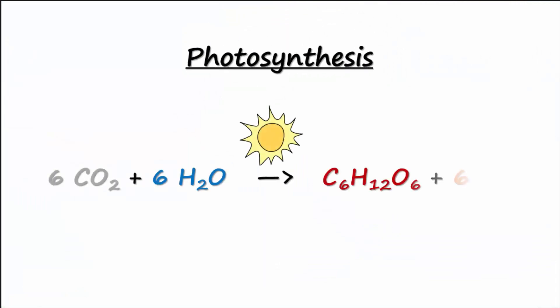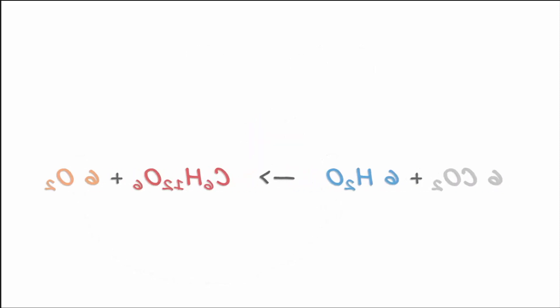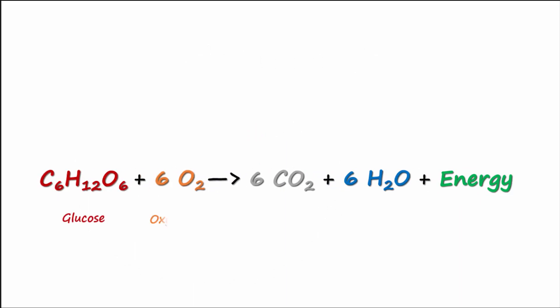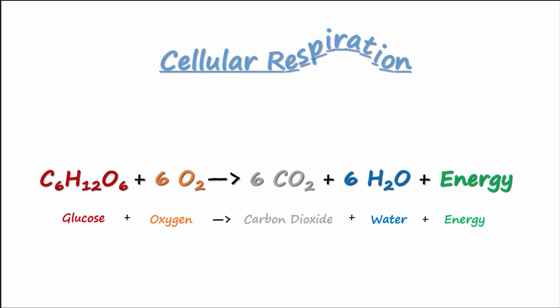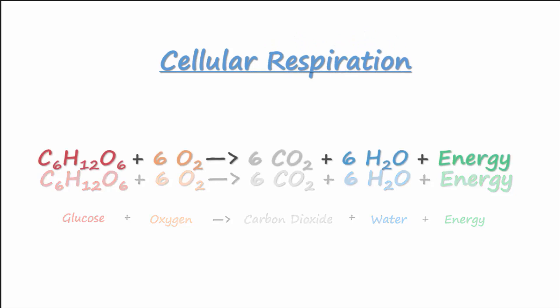This tree uses sunlight in a process called photosynthesis to use the carbons from carbon dioxide to make glucose. Our bodies do the opposite of photosynthesis and utilize glucose and oxygen to yield carbon dioxide, water, and energy in a process known as cellular respiration.